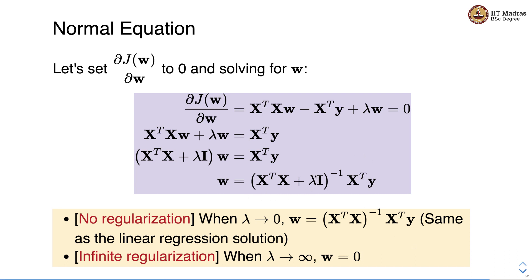You can see that this normal equation is the same as the linear regression normal equation except that the term lambda I is added inside the bracket. If we use lambda equal to 0, that is the no-regularization case, we end up with w equal to x-transpose x inverse x-transpose y, which is exactly the same as the linear regression solution.